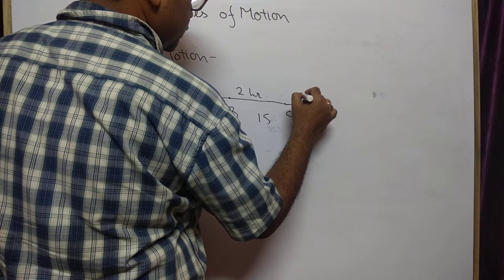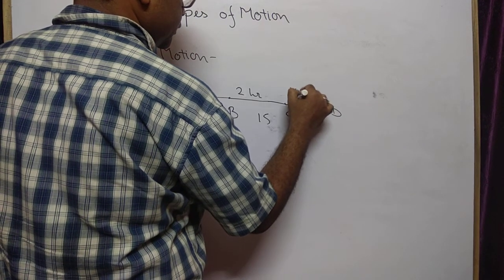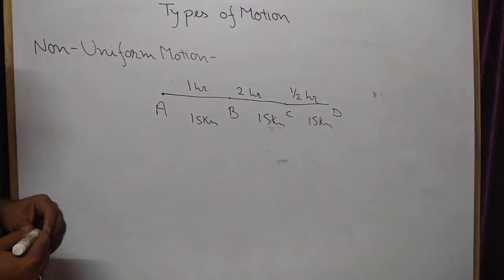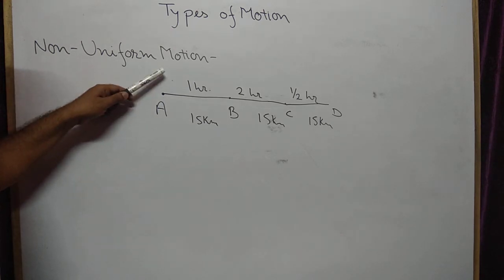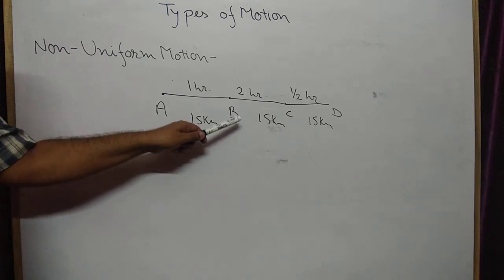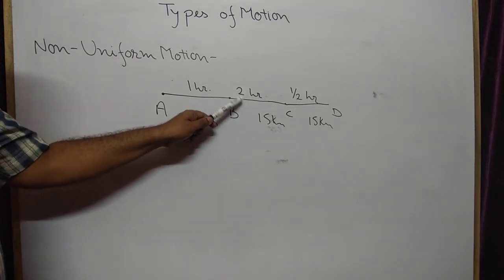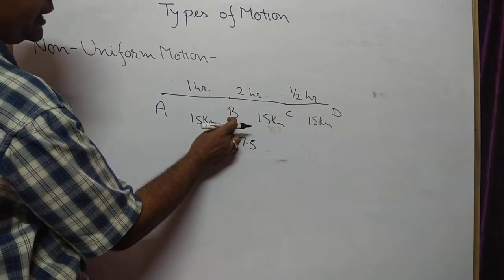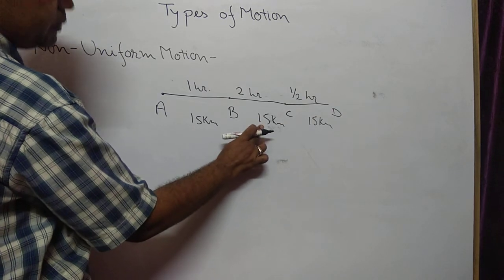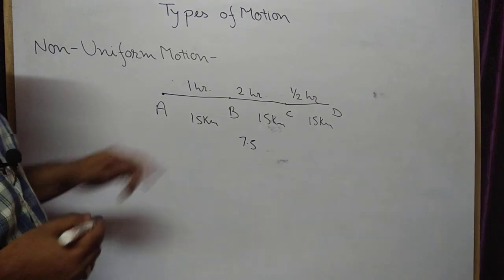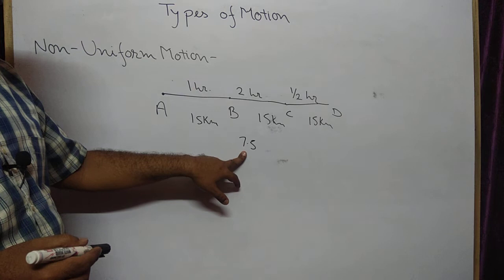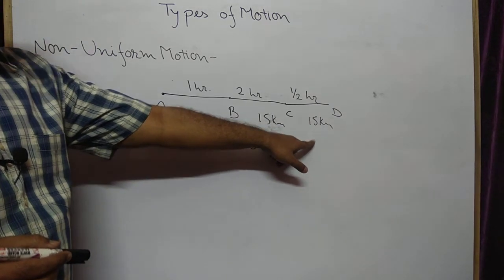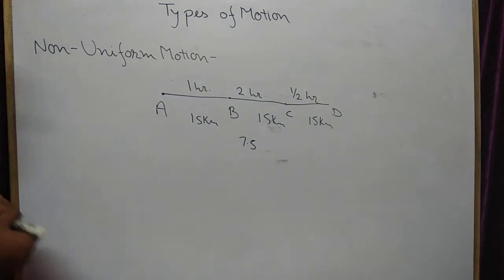Similarly, from C to D it takes only half an hour with the same distance of 15 km. Here we observe that the distance covered is not equal in equal intervals of time. In one hour the body is effectively covering only 7.5 km in the second hour since it takes 2 hours for B to C. Then in the next half hour it travels 15 km, meaning at that rate it would cover 30 km in one hour. This type of motion is known as non-uniform motion.